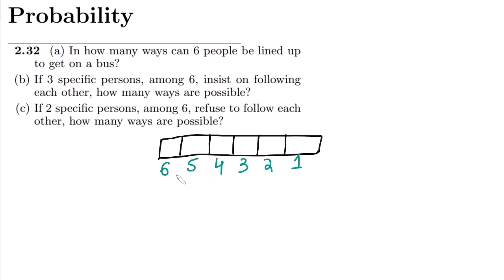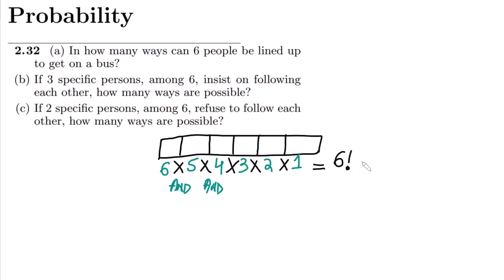These values have to be multiplied together because any one of the six people can occupy the first slot while the others fill the remaining slots. This is an AND operation, so we implement the multiplication rule. Multiplying them together: 6 × 5 × 4 × 3 × 2 × 1, which is 6 factorial, and this equals 720. That is the answer to Part A.